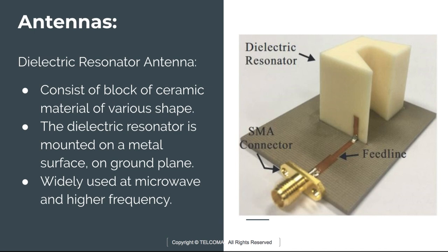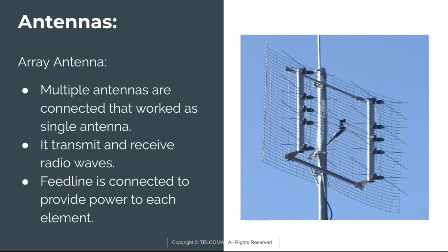The dielectric resonator antenna is a very small antenna used at microwave and higher frequencies. It consists of a block of ceramic material of various shapes, mounted on a metal surface and ground plane. It has low losses and can be used at microwave as well as millimeter wave frequencies. Radio waves are introduced inside the resonator material from the transmitter circuit and bounce back and forth between the resonator walls, forming standing waves that produce electromagnetic radiation.